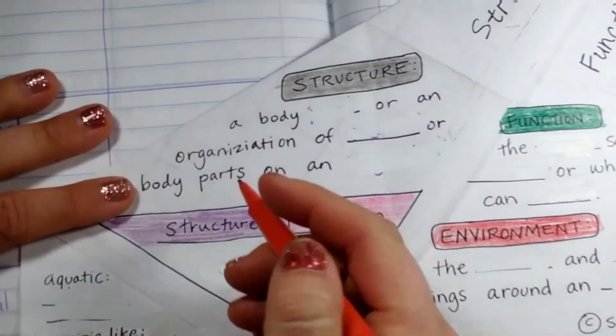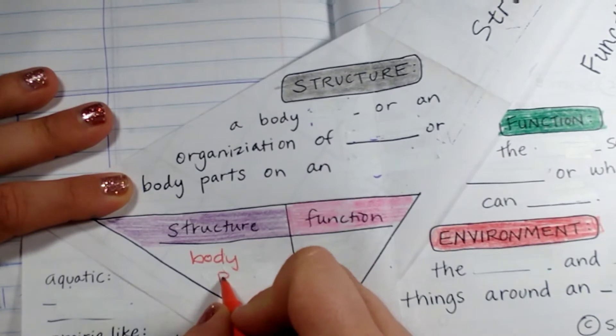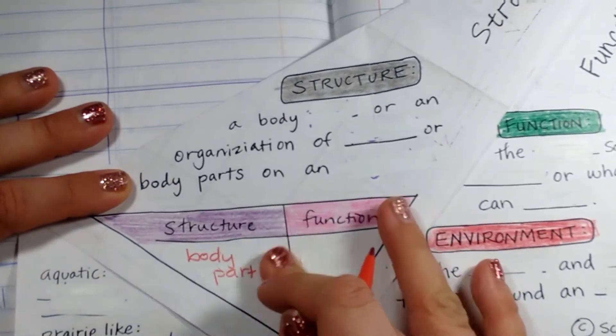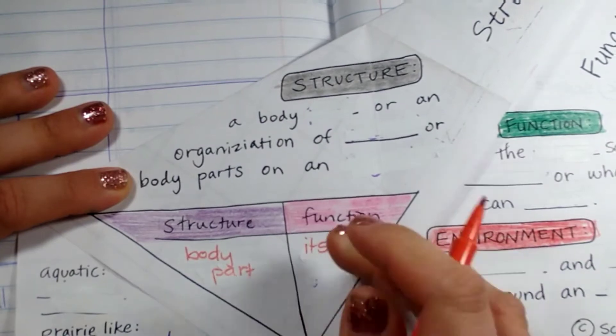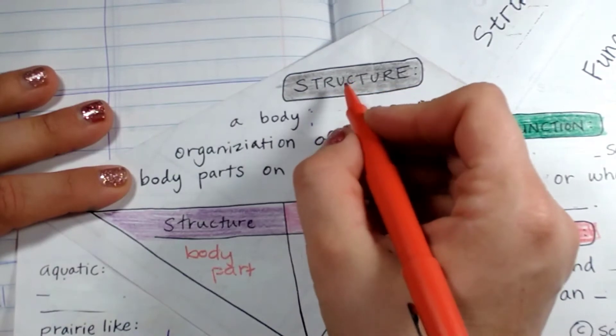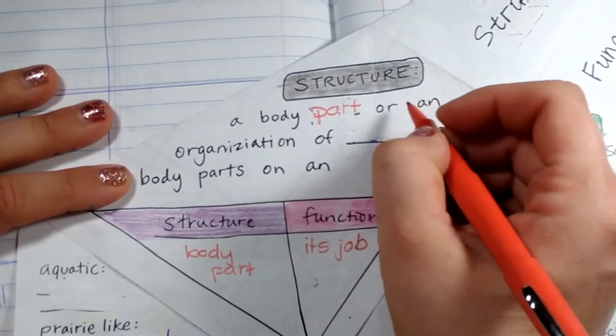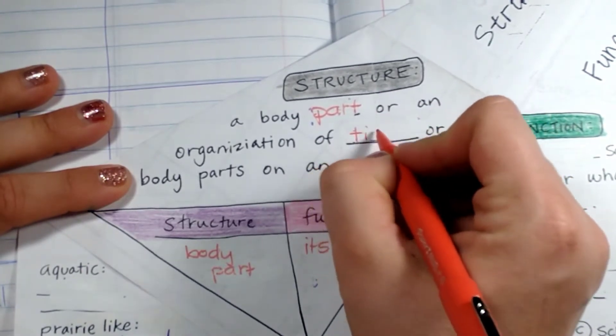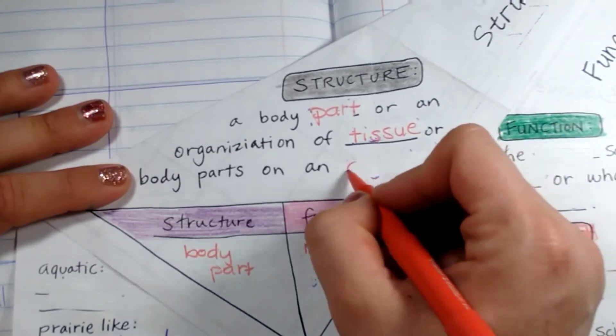A structure is a body part. And a function is its job. A structure is a body part or an organization of tissue or body parts on an organism.